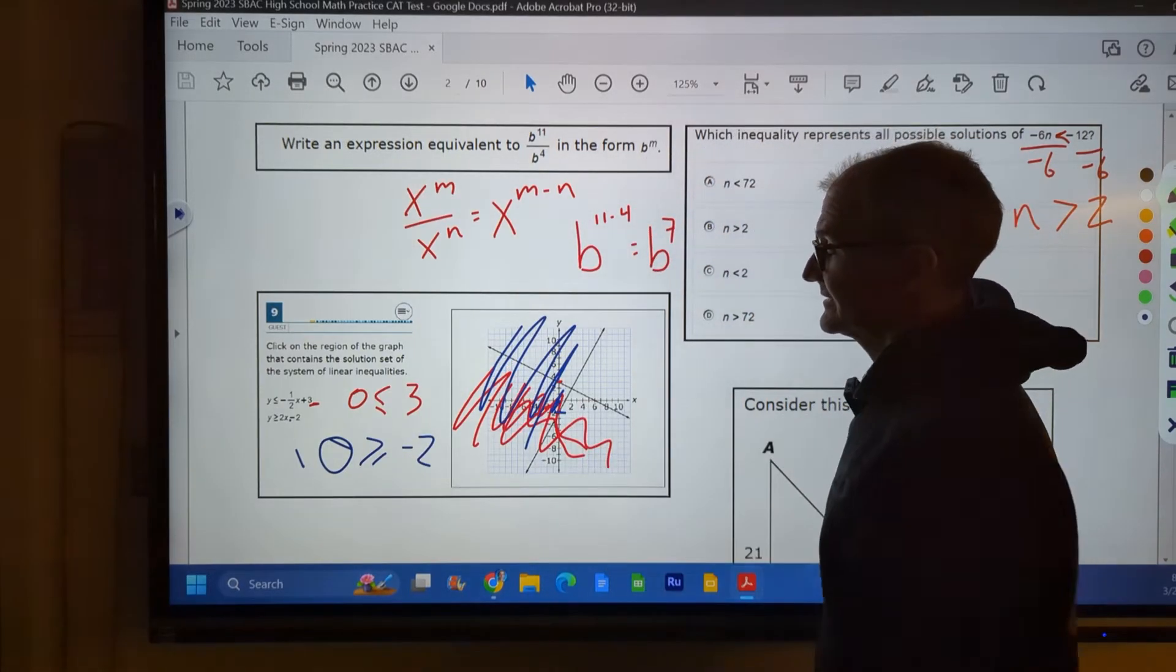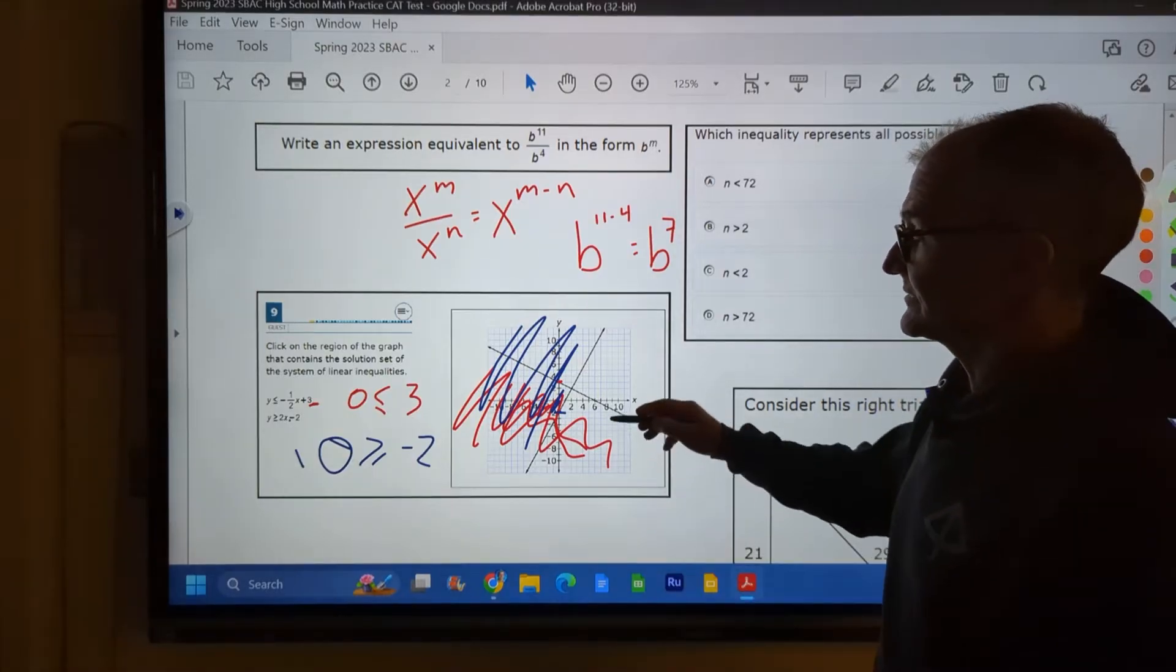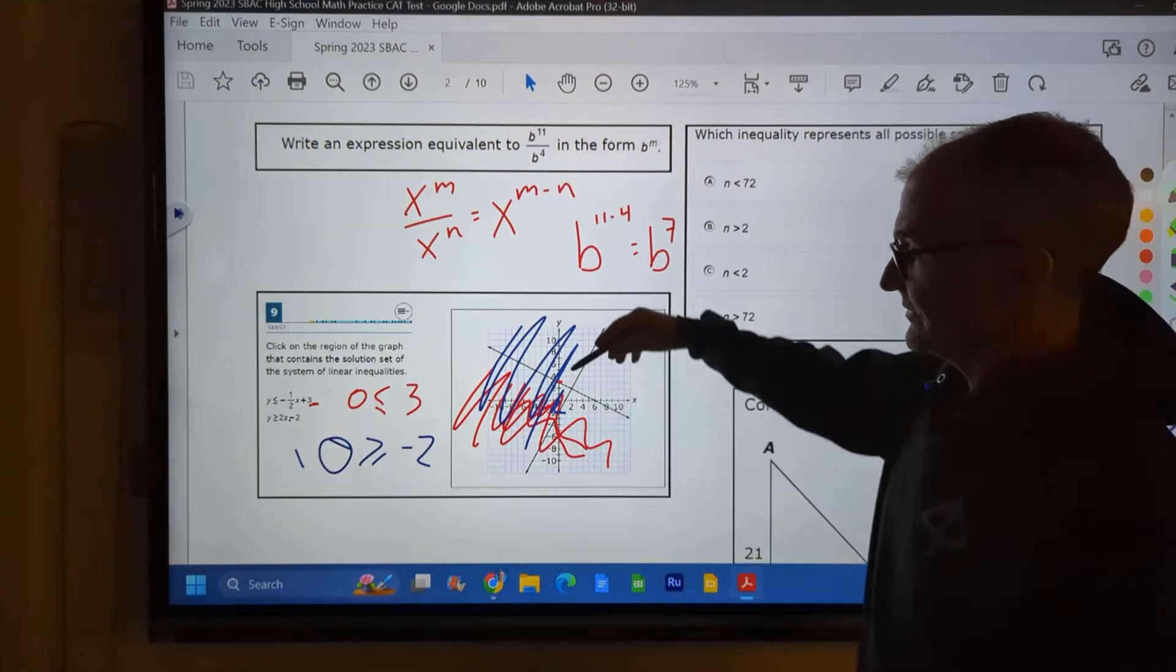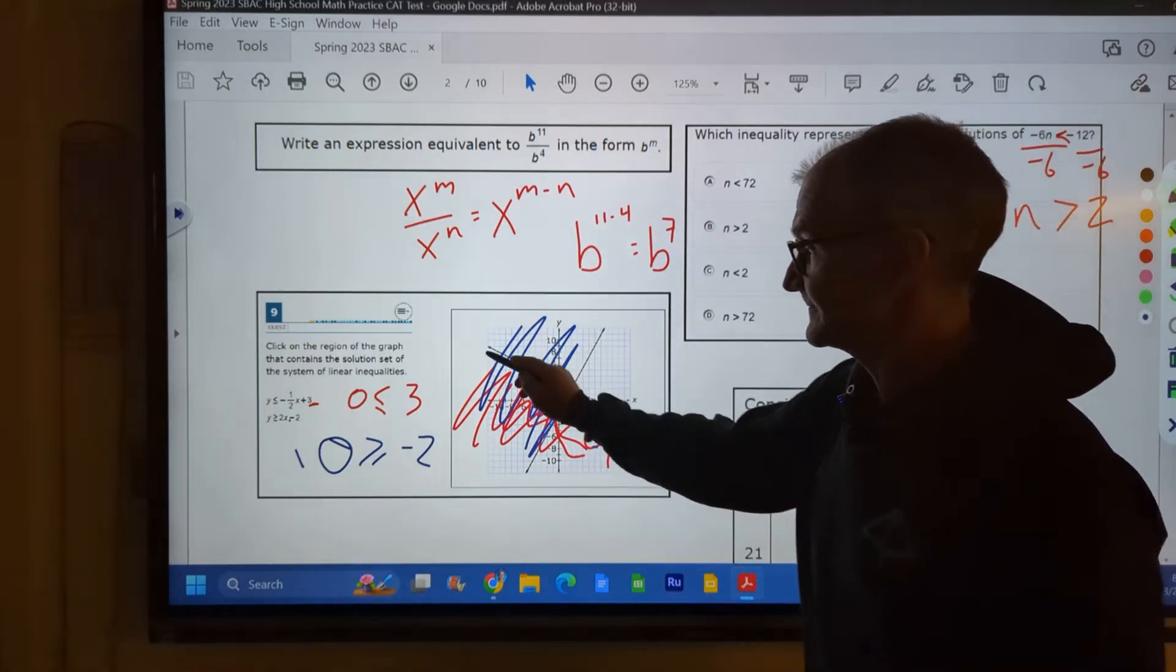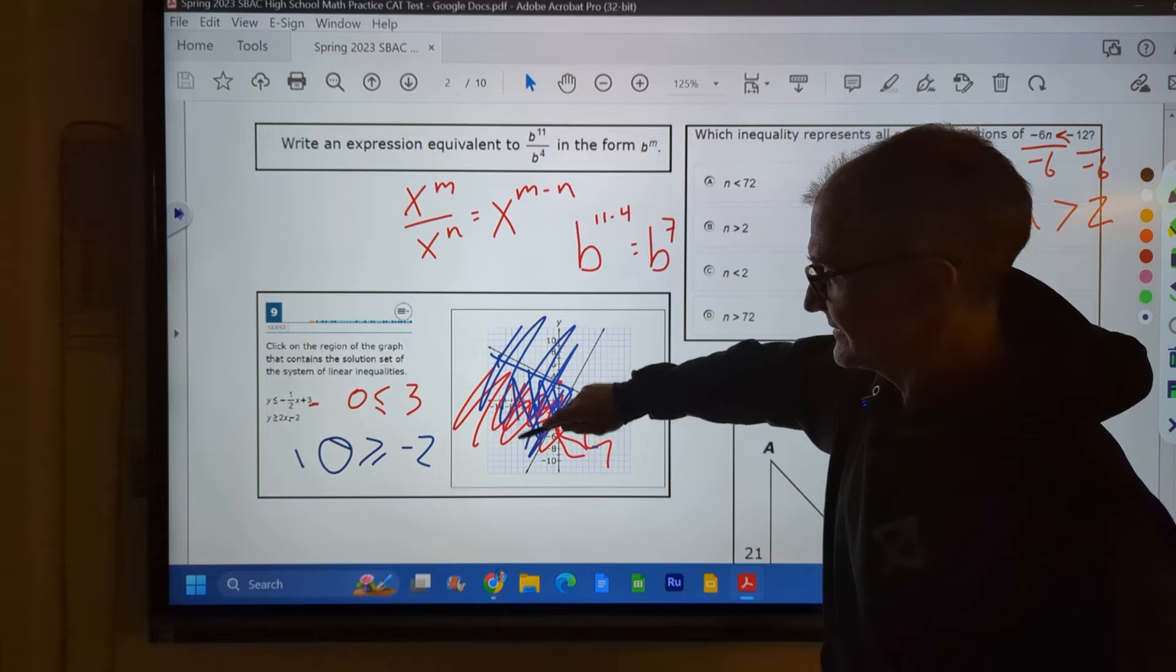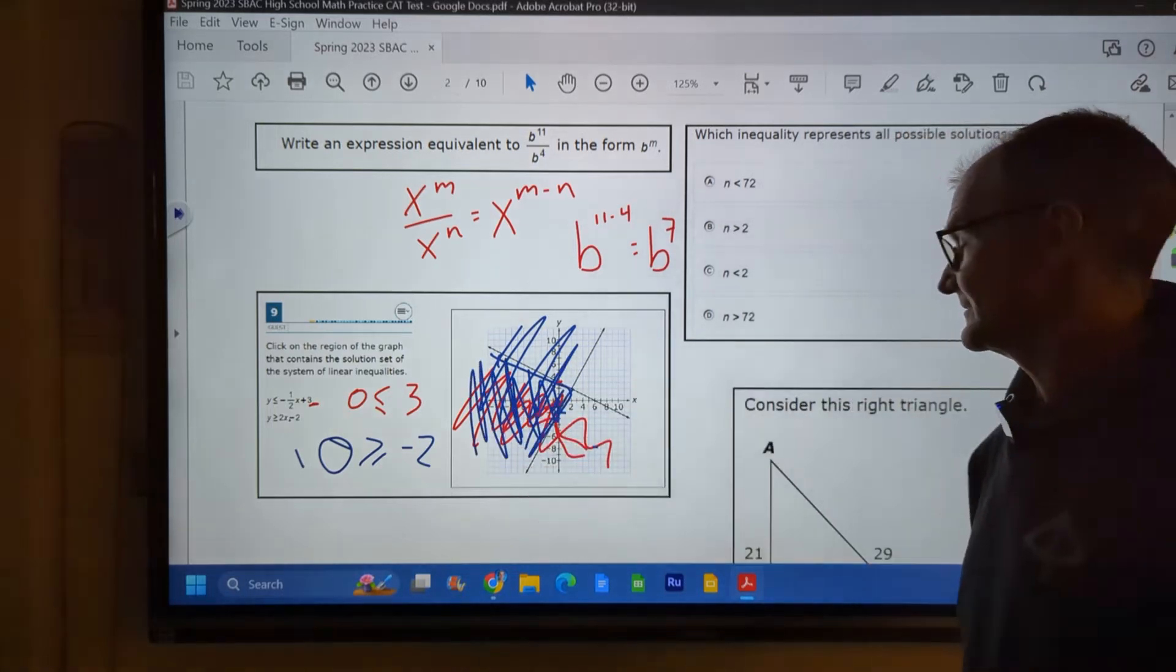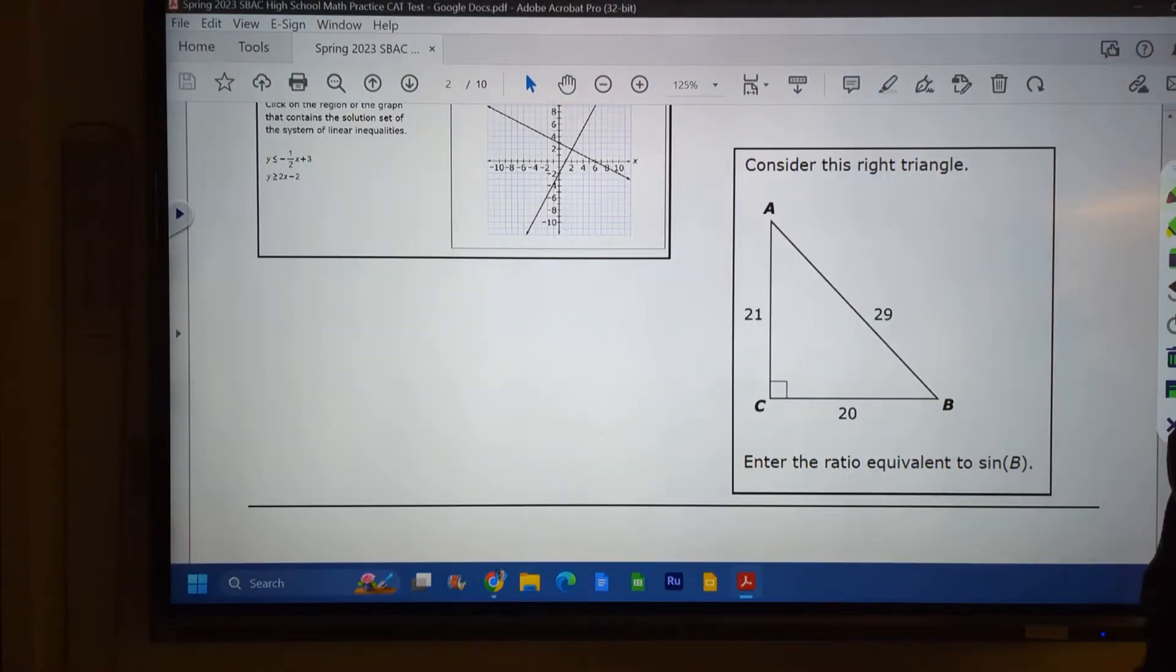And then the correct answer is where they are shaded together. So the blue solution is above here, the red solution down here. The intersection is this quadrant right here. So that's my answer right there.